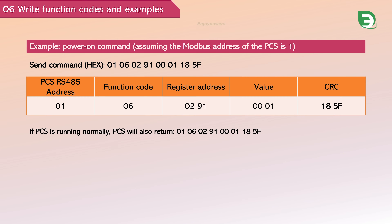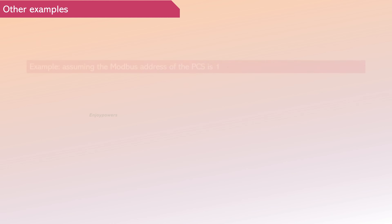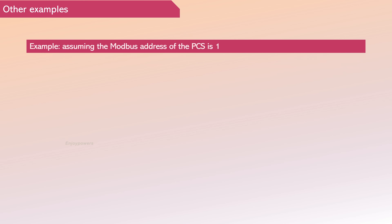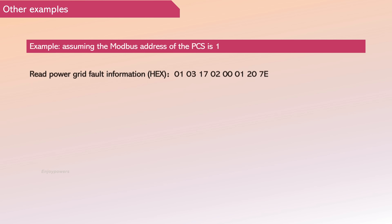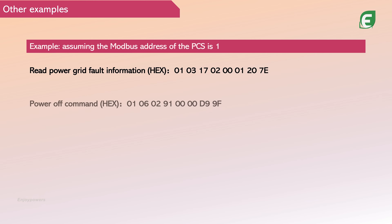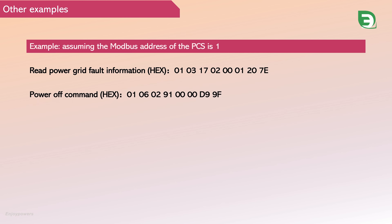After the PCS successfully executes the command, the same information will be returned, indicating that execution has been completed. Similarly, several other sample commands are provided, including reading grid fault information, sending shutdown commands, reset commands, and commands to solidify parameters.